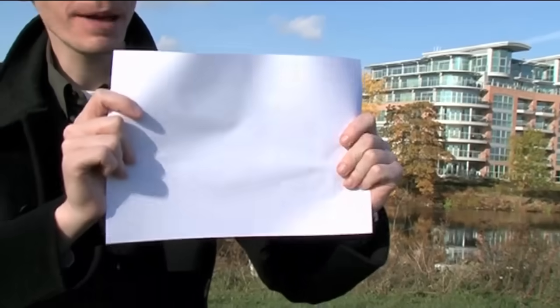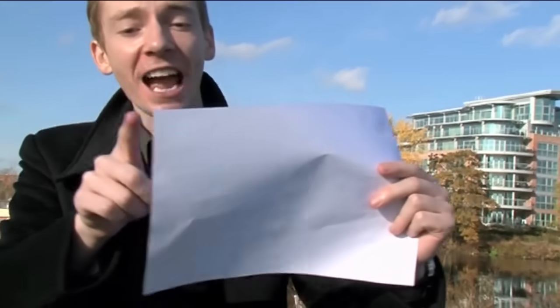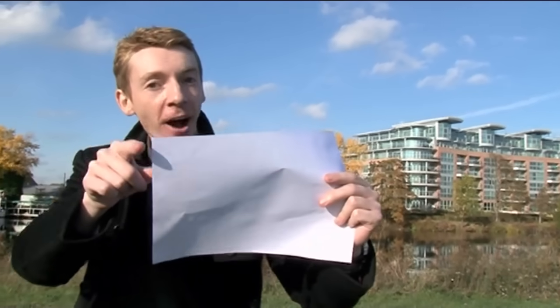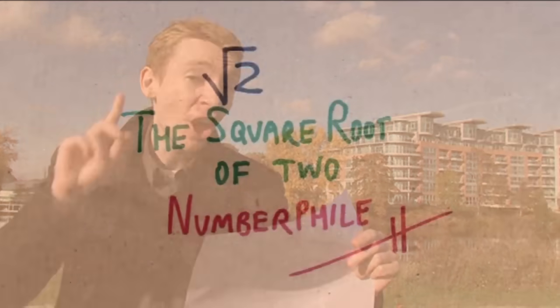If you take a piece of paper like this, if you look at the ratio between the long edge and the short edge, which means if you measure the long edge and you divide by the short edge, it will be the square root of 2. And they pick this on purpose.